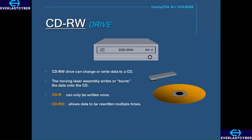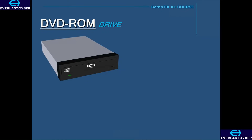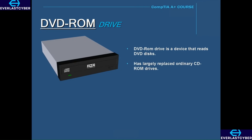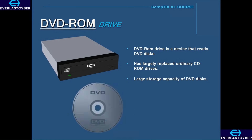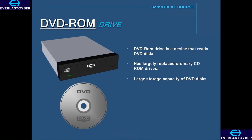CD-ROMs hold approximately 700 megabytes of data. A DVD-ROM drive is a device that reads DVD discs. The DVD drive has largely replaced ordinary CD-ROM drives because of the larger storage capacity of DVD discs. A DVD can store approximately 4.7 gigabytes of data, and all DVD drives today can read both DVDs and CD-ROMs.